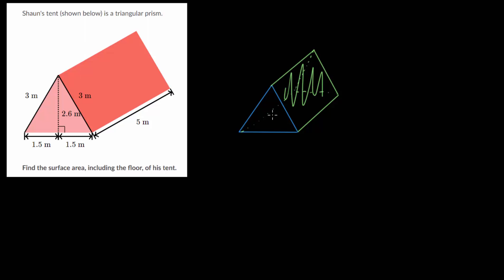So there's one on the right side, there's one on this back side here, and there's a rectangle on the bottom, since we also want to include the floor of the tent.